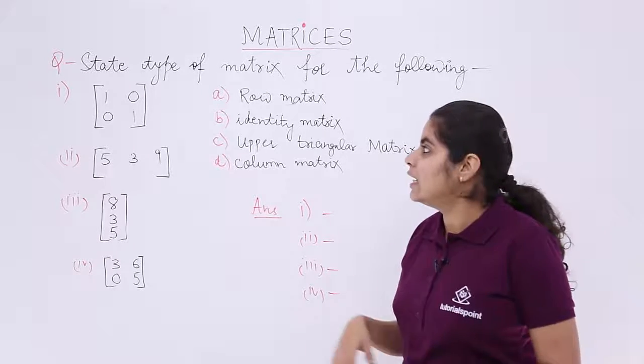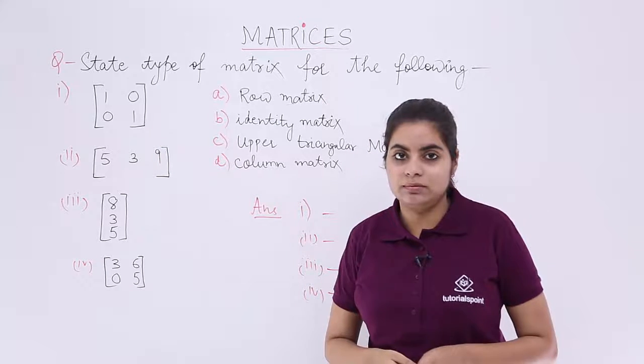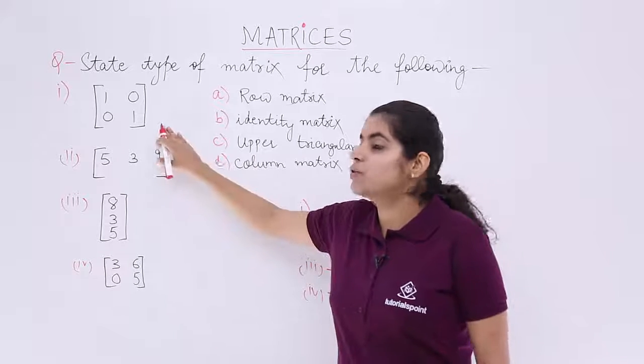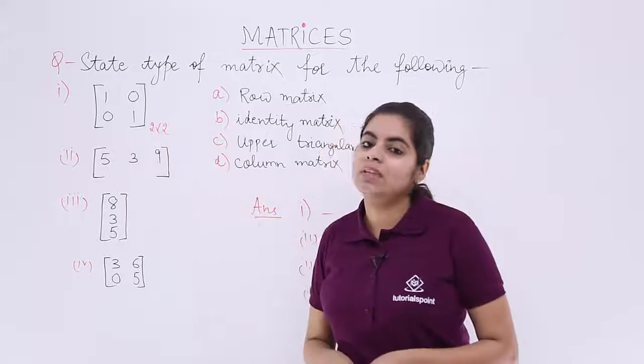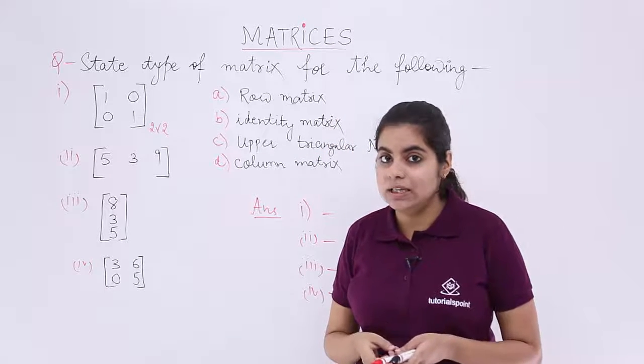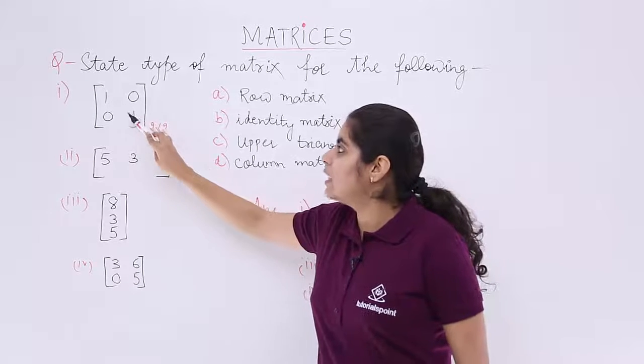The first part reads as [1 0; 0 1]. What is the order of this matrix? The order of this matrix is because of two rows and two columns. It is 2 by 2. I also know that there is unity in the diagonal elements. Do you see the diagonal elements? They are 1 and 1.